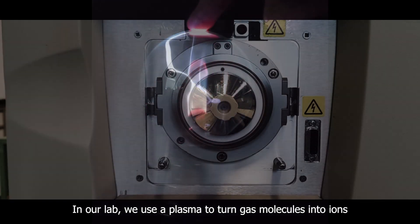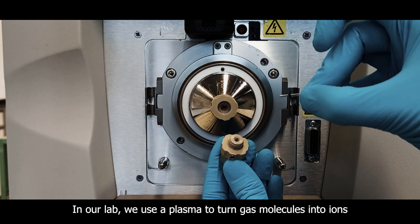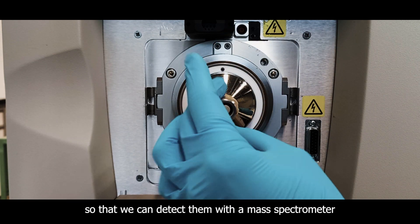In our lab, we use a plasma to turn gas molecules into ions so that we can detect them with a mass spectrometer.